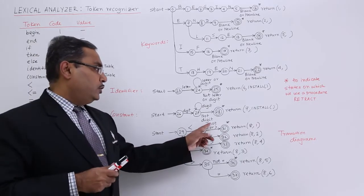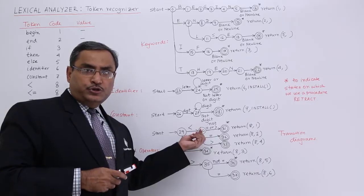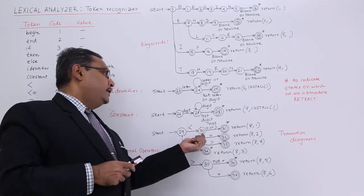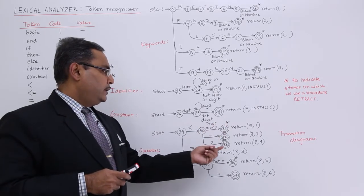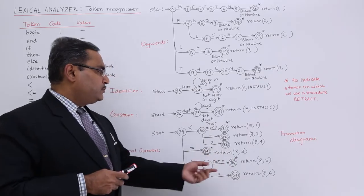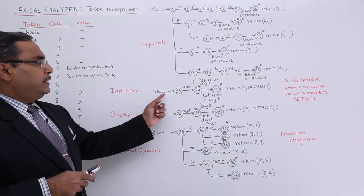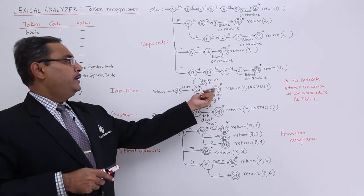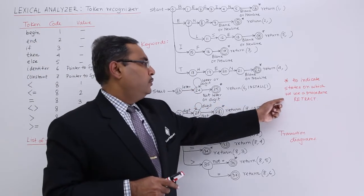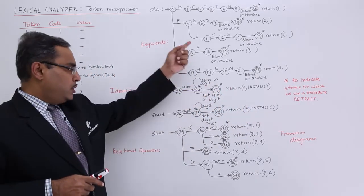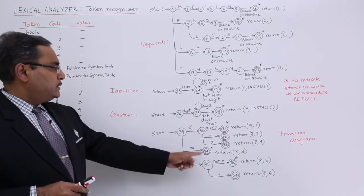You see, not this, that means I have proceeded for one character, then I should come back. Retract will be required here. In this way it is working. Retract will be required here, so star has been put.